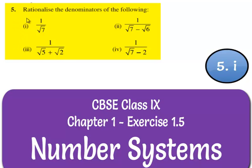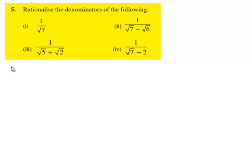Now let us move on to the fifth question. The question is, rationalize the denominators of the following questions. So let us consider the first bit. The first bit is to rationalize the denominator of 1 by root 7.